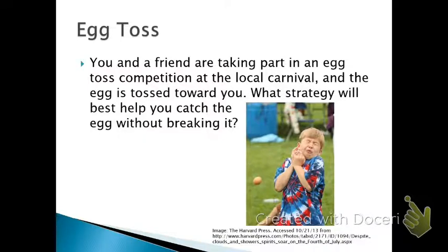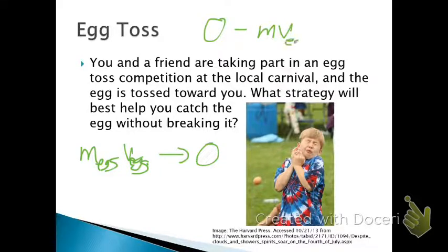The difference between those two methods of catching it is really just how quickly it's stopping. Either way you do it, the momentum of the egg is changing from whatever it was, which is the mass of the egg times the velocity of the egg, to zero. Once you catch it and stop it, it's changing to zero. So the total change in momentum, no matter how you do it, is going to be the same. It'll be the final condition, zero, minus the initial mass times velocity of the egg. That's going to be the change in momentum.